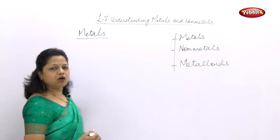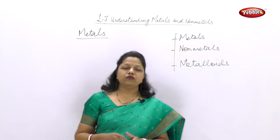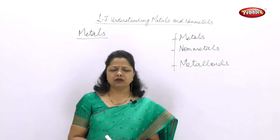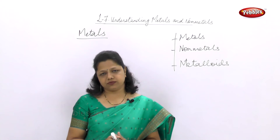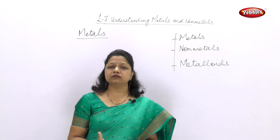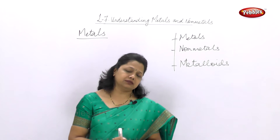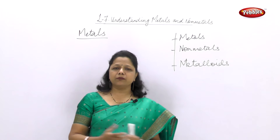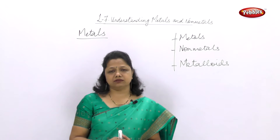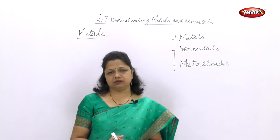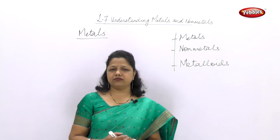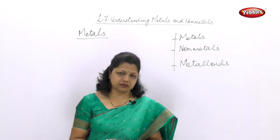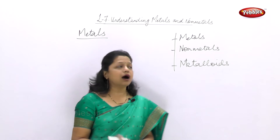When we talk of metals, we think that metals are hard. We have seen many hard substances in our surroundings. In our kitchen, we use vessels, utensils, and cookers — all made up of hard substances which are metals. So the first characteristic feature of metals is hardness: metals are hard.